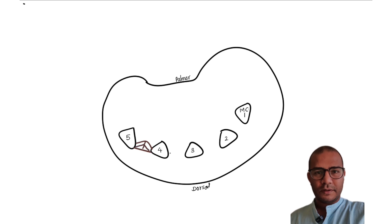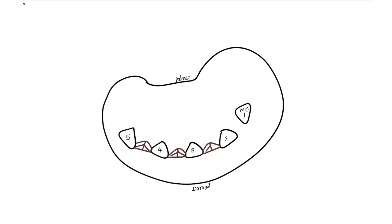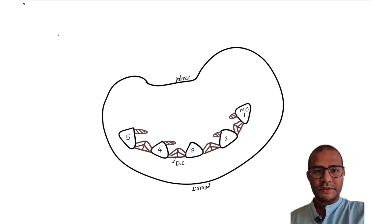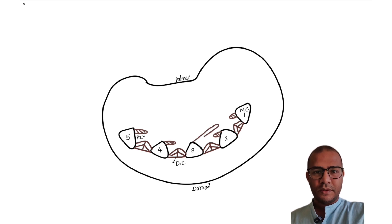Next we will draw dorsal interossei. After dorsal interossei we will draw palmar interossei. We know that palmar interossei arise from all the metacarpals except the third metacarpal. From the third metacarpal we will draw adductor pollicis, which will go laterally for insertion.